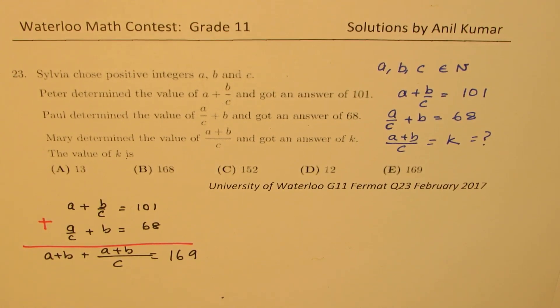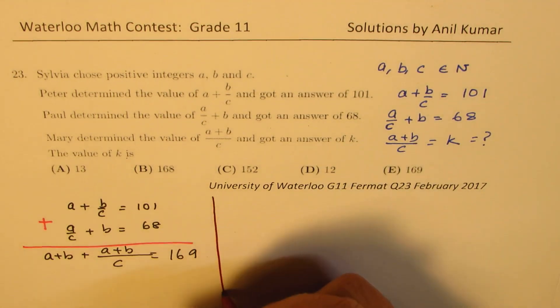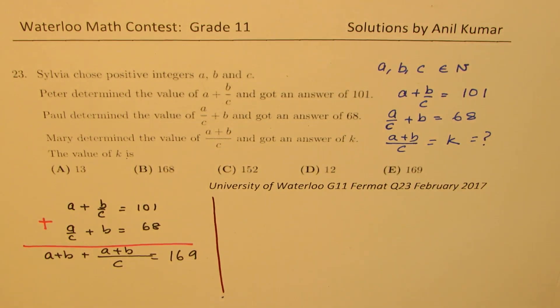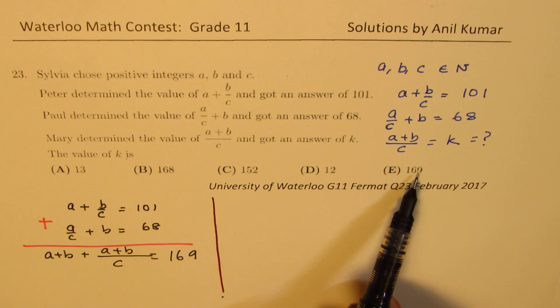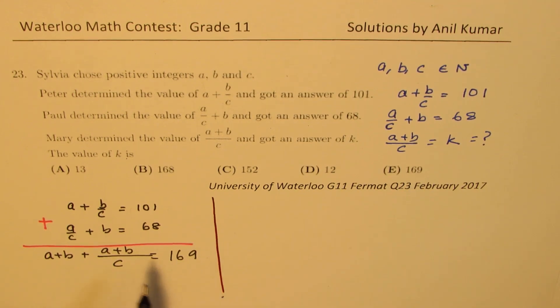And we have A plus B equals to add them 169. So very beautiful number 169, which is 13 squared. So we get something like this. Now, how can we from here get the answer? If you look at these numbers 13, 168, 152, 12, and 169, you can actually guess your answer at this stage. It's a multiple choice question.